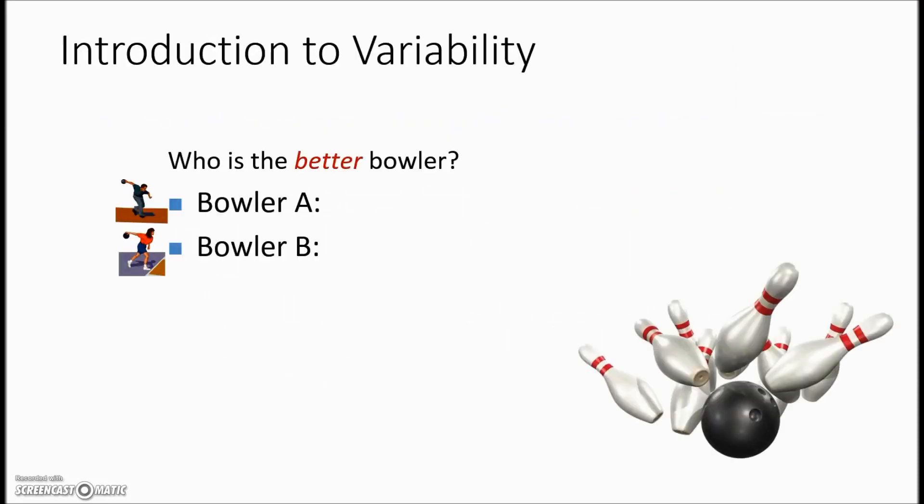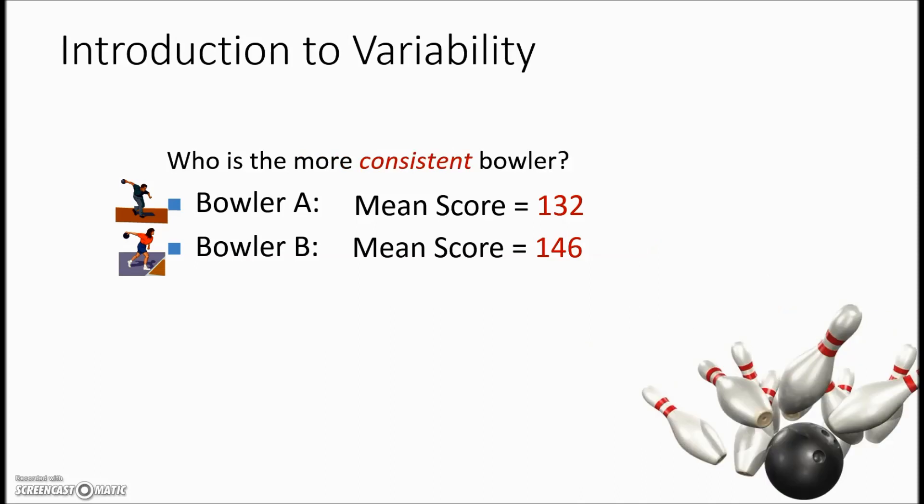Another example to illustrate variability: if you were asked the question who's the better bowler and we were given just the mean scores for each one most of us would select bowler B. But if the question was who is more consistent, to make that determination we need to see the scores to decide whether there's a similarity to these scores.